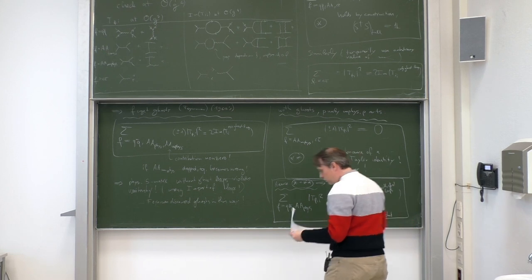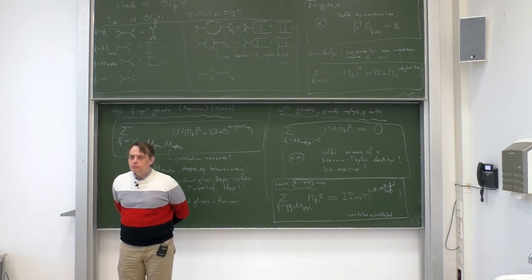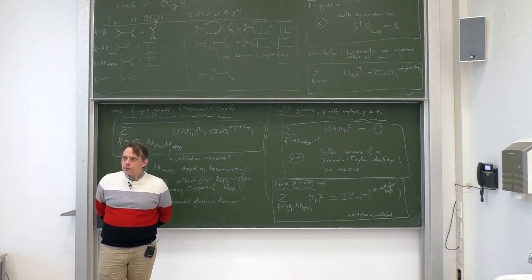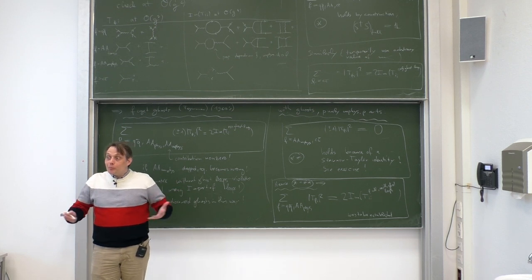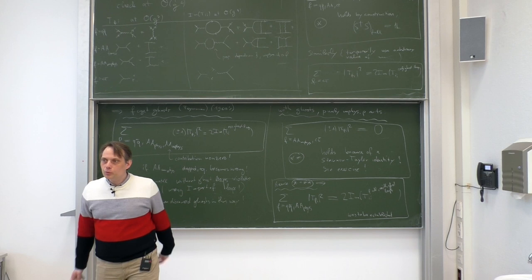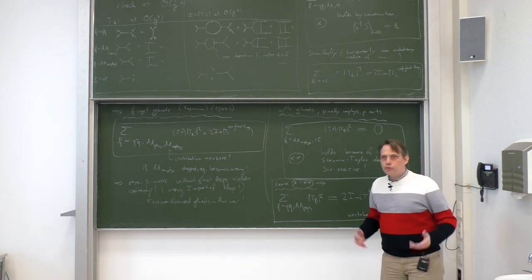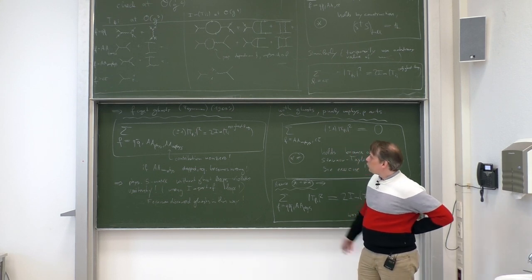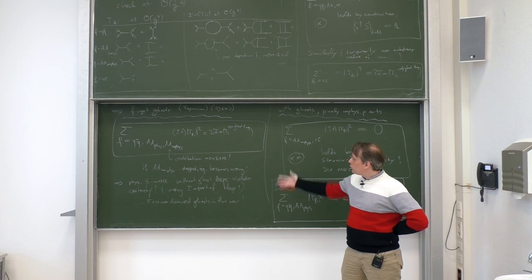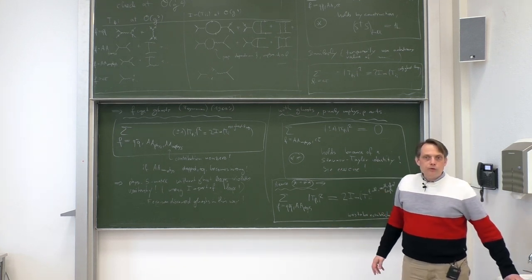The ghosts are necessary to correct the imaginary part of the loop diagrams such that the imaginary part matches the left-hand side of the optical theorem from physical states. We have established that we can define a physical Hilbert space with only positive-norm states, and on this positive-definite Hilbert space we have a unitary physical S matrix.